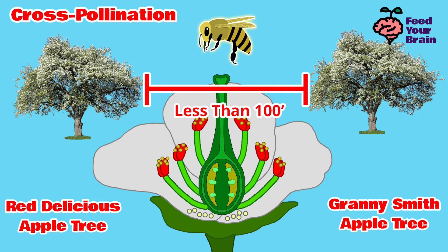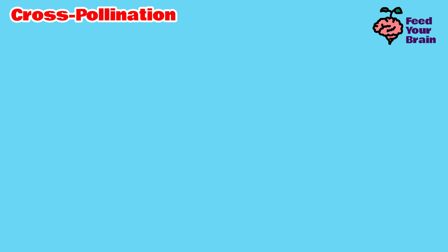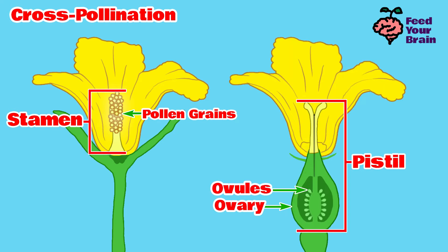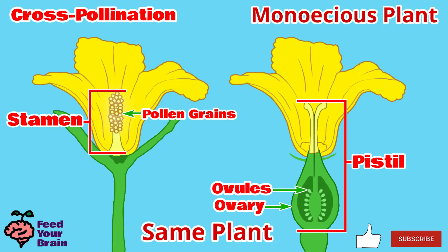That was an example of cross-pollination. There is another type of flower requiring cross-pollination where the stamen is alone on its own flower and the pistil is alone on its own flower, and both are on the same plant. This is called a monoecious plant — mono means one — so monoecious means one plant with both male and female flowers on it.